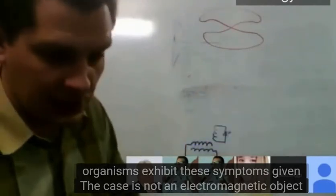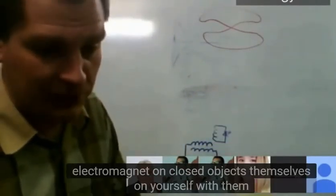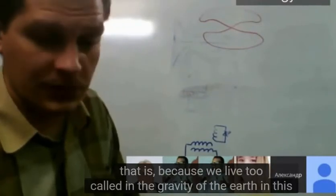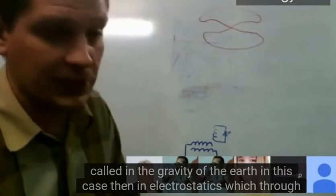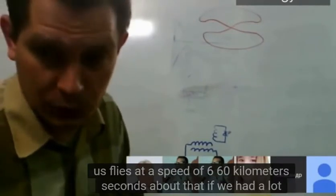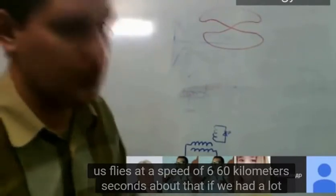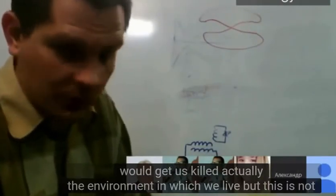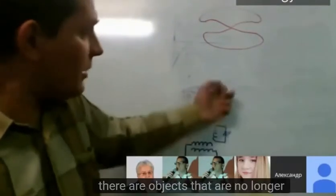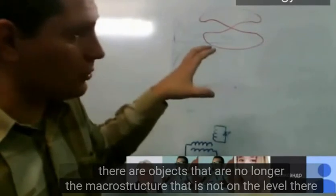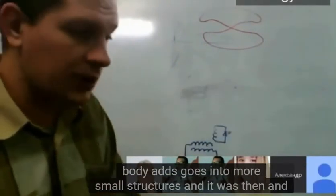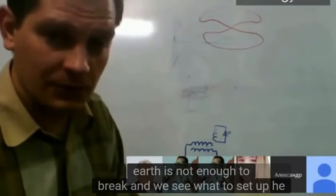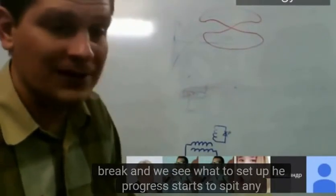In 90% of cases, problem areas of the organism show friction at that point. There appear objects that from the macrostructure — not on the level of the body organs — go into much smaller microstructure. Then the speed of flow that pushes us to earth is not enough to break them, and we see that we start to progress any disease.